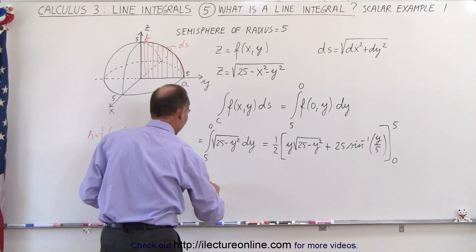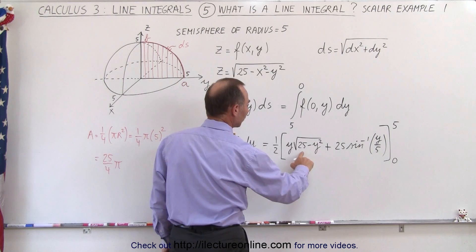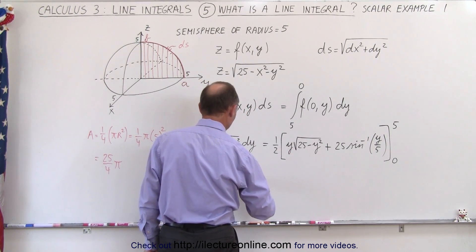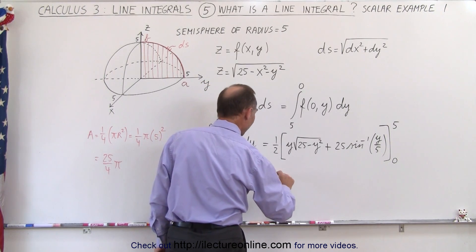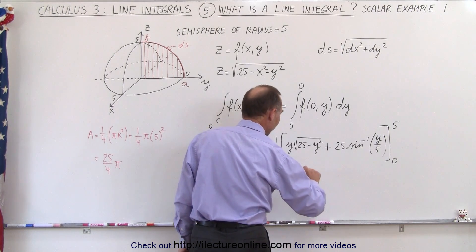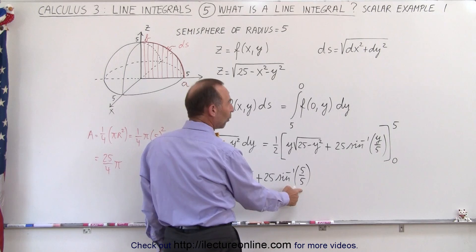And so this becomes equal to 1 half times 5 times the square root of, ooh, look at that. That also goes to 0 because I get 25 minus 25. So this goes to 0 anyway, plus 25 times the inverse sine of 5 over 5. So that's the inverse sine of 1.